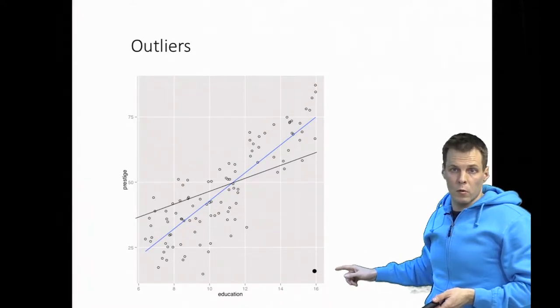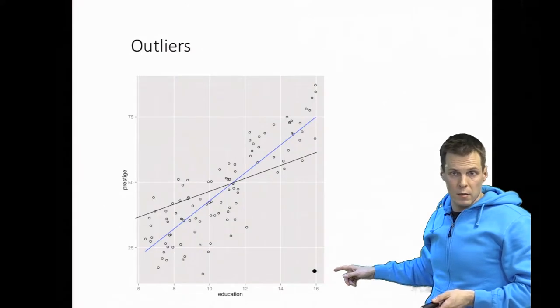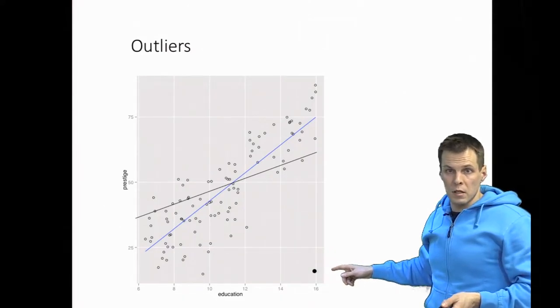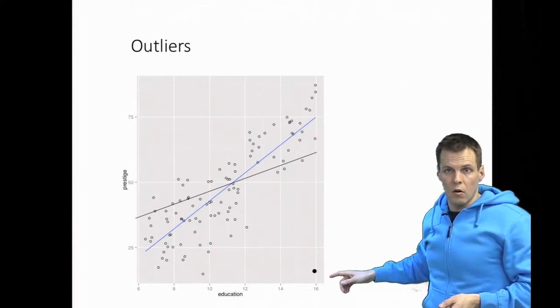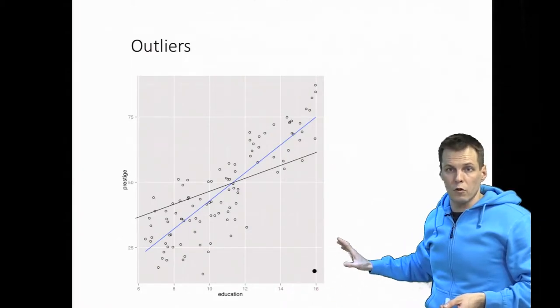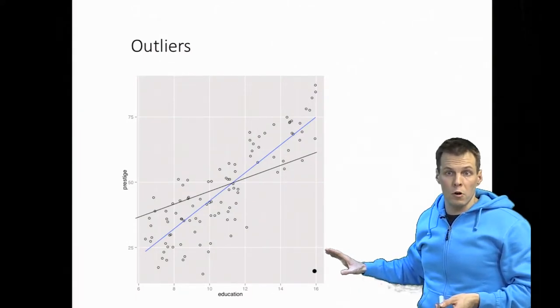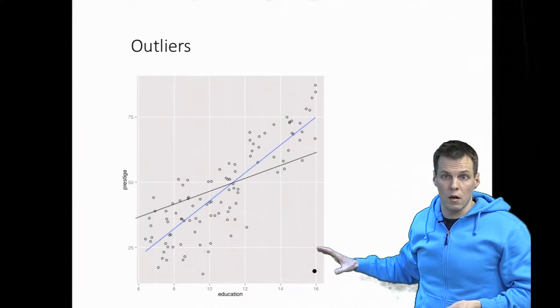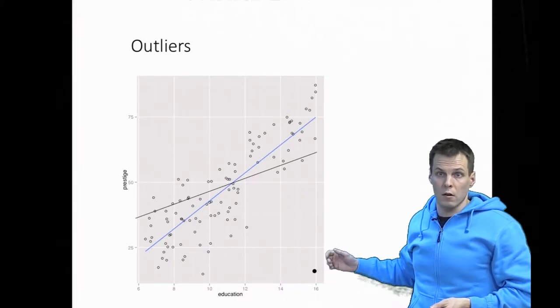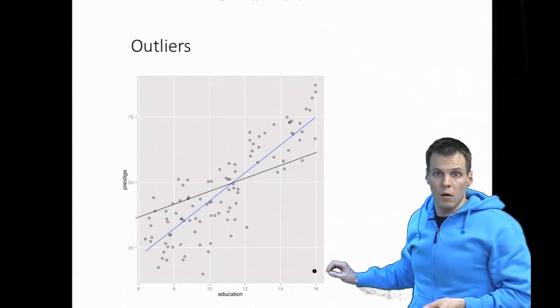Before we decide what to do with the outlier, we have to consider the different mechanisms. What is this observation really about? It could be a data entry mistake—the occupation's prestige really should be 70, but somebody wrote 17. Or it's possible that this is an outlier outside of our population. If we do a survey of small technology companies, we could accidentally send the survey to a large technology company that would be outside of our population.